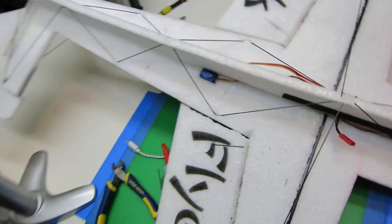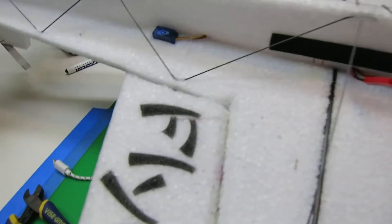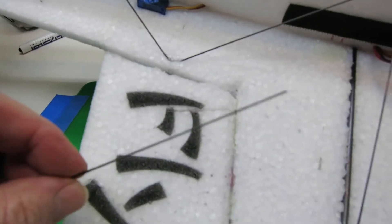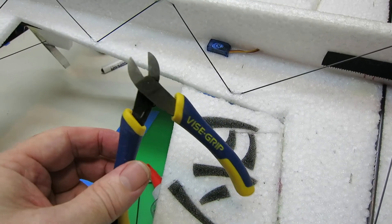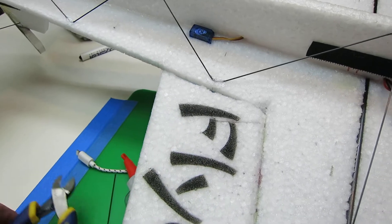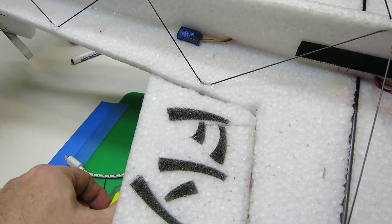So I put some CF Rod, just plain old 1mm that you can get. It's really nice. You can just cut it with wire cutters. You don't have to worry about using a Dremel and getting dust everywhere.